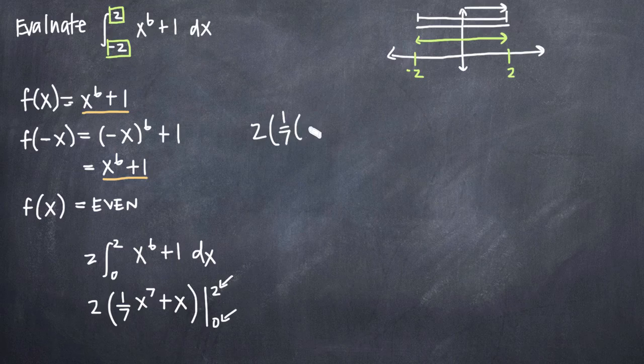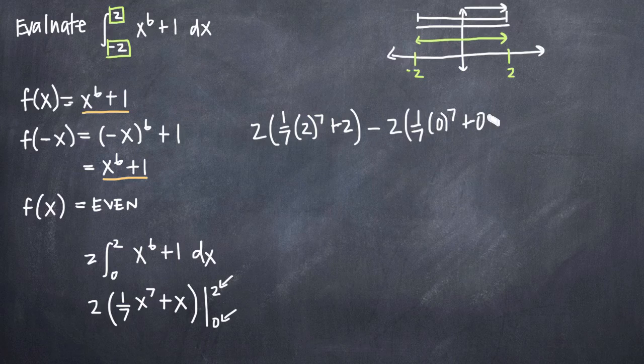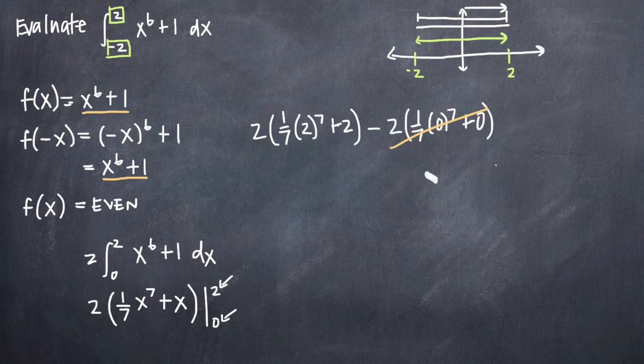So we'll get 1/7th times 2 to the seventh power plus 2 minus 2 times 1/7th times 0 to the seventh plus 0. And obviously we can see here this entire second term will go away because we're just going to have 0.